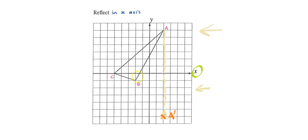Nice and simple. From B to the x-axis is one step. So we repeat it on the other side, one step. And so, point B dash is here.